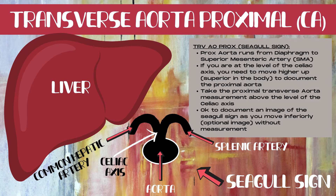Document all transverse proximal aorta images above the level of the celiac axis. In the transverse plane, look for the seagull sign and then move more superiorly. The seagull sign consists of the transverse aorta as the body, the celiac axis as the body of the seagull, and the common hepatic artery and splenic artery as the wings. If you see the seagull sign, you can document it as an optional image, but your measurements of the transverse proximal aorta should be taken more superior, above that seagull sign.